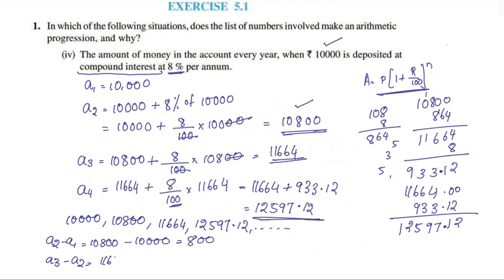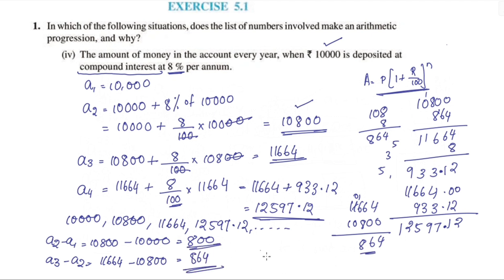Now checking: A2 minus A1 = 10,800 minus 10,000 = 800. A3 minus A2 = 11,664 minus 10,800 = 864. The differences 800 and 864 are not equal. Therefore, the difference is not the same, and this is NOT an AP. This is expected because compound interest grows at a varying rate.